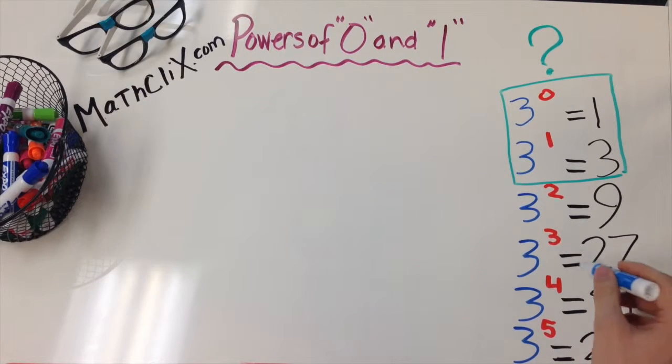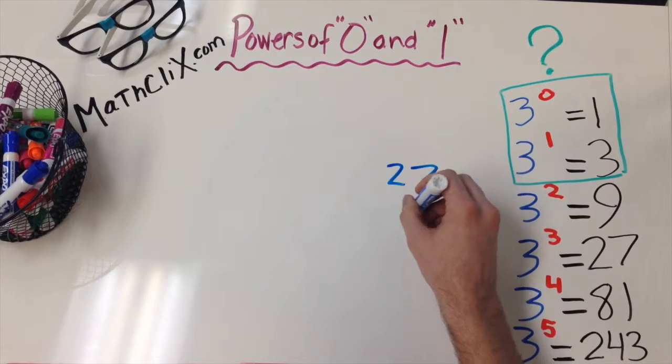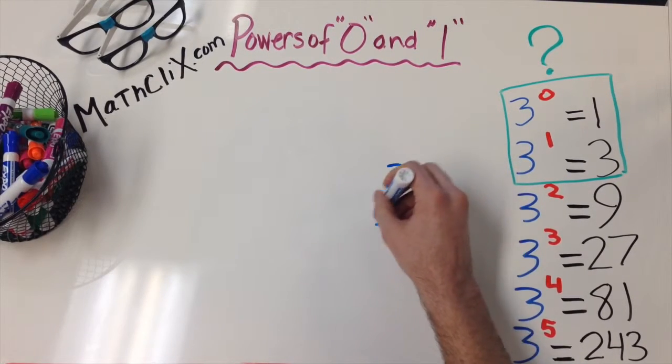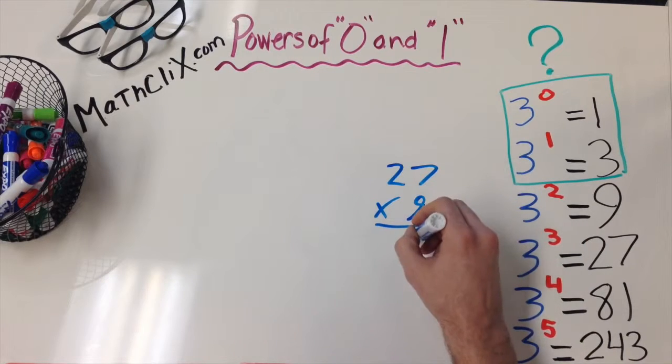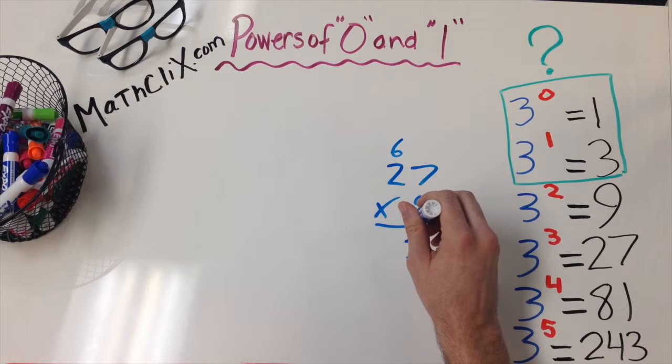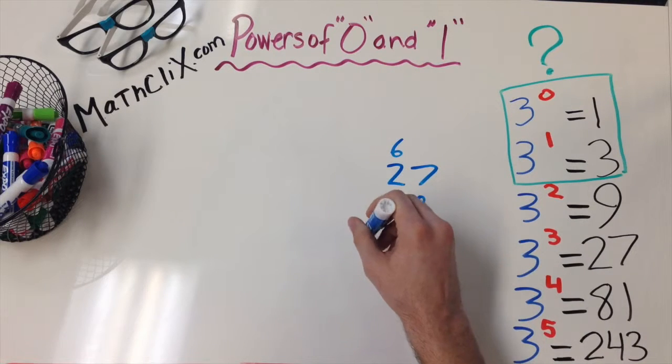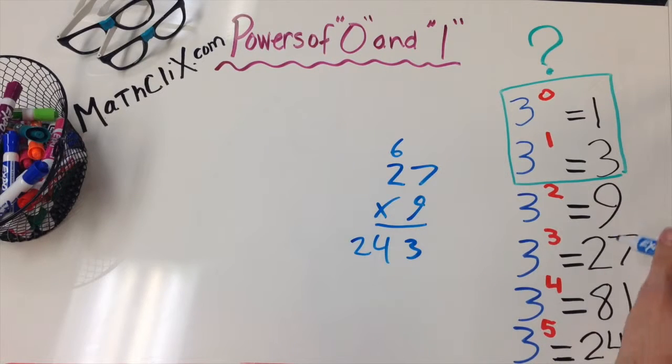So, we know if we multiply 27 by 9, that's 63. Carry this 6. That's 9 times 2, 18 plus 6 is 24. Well, 27 times 9 equals 243.